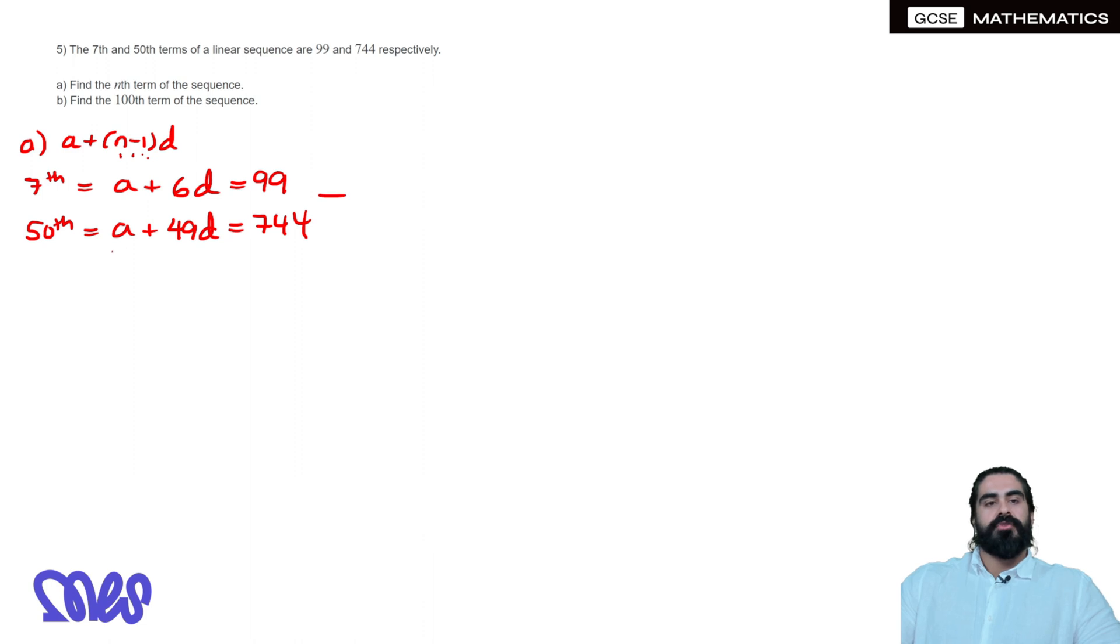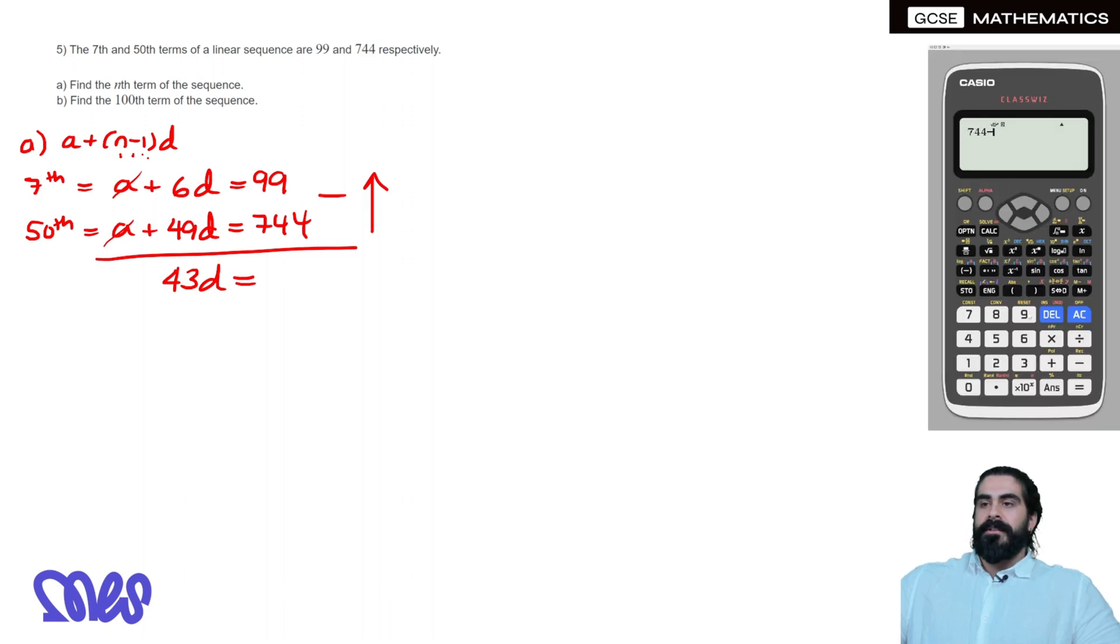And now we need to solve for D by subtracting the two equations, I'm going to subtract upwards, so A take away A cancels, 49D subtract 6D, 9 minus 6 is 3, so we get 43D equals, then this would be on a calculator paper, so let's use the calculator, 744 minus 99, is 645, and then we divide both sides by 43, divide by 43, we get 15. And then we substitute that into any of the equations, I'll probably put it into the first one, A plus 6 lots of D is 99. Now, 6 times 15, and we can put that in the calculator, just to make sure, but we should get 90, we do, is 99. Then we subtract the 90 over, we get A equals 9.